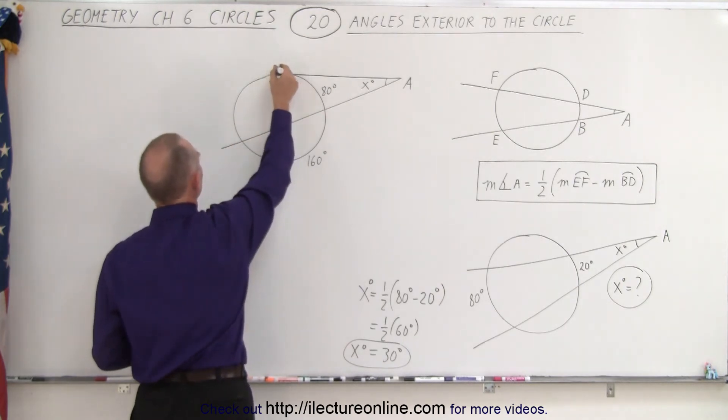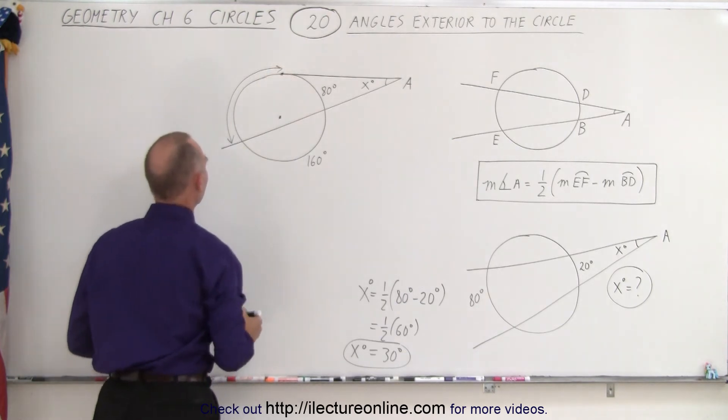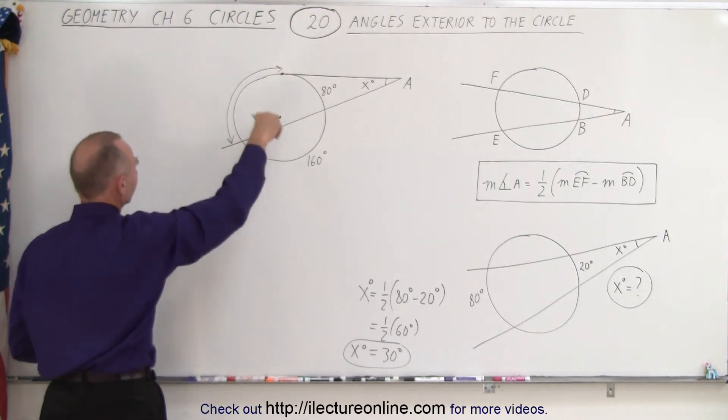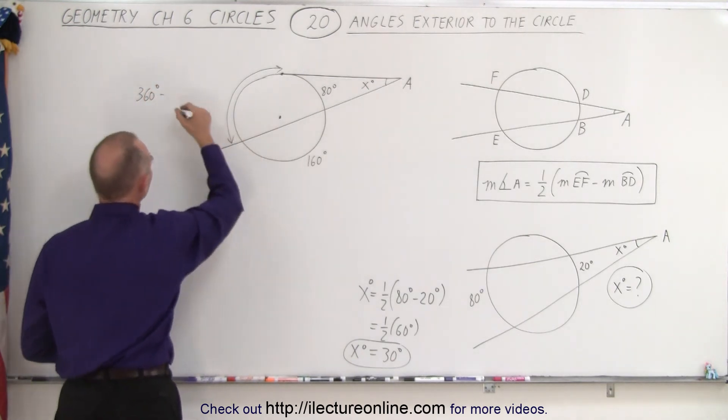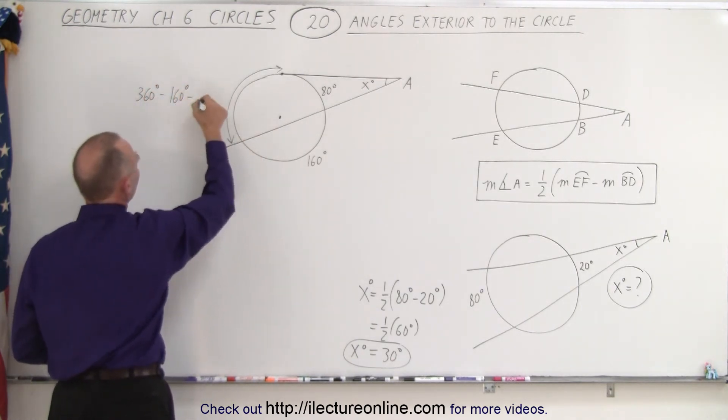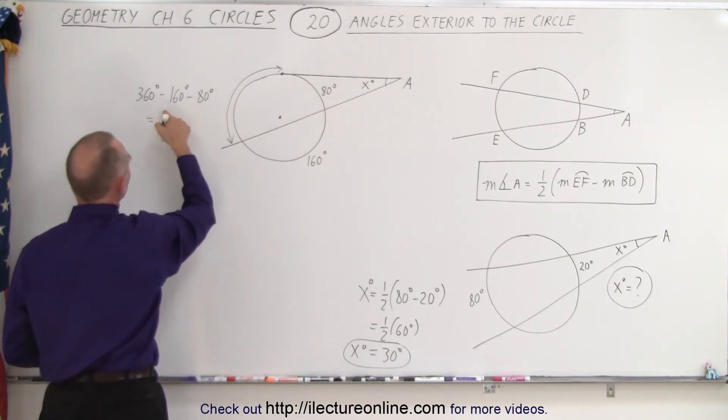So this arc right here can be expressed in terms of the full circle, and we can say that this is equal to 360 degrees minus this part of the circle, which is 160 degrees, minus that part of the circle, which is 80 degrees. That would therefore be equal to 200 minus 80, or 120 degrees.